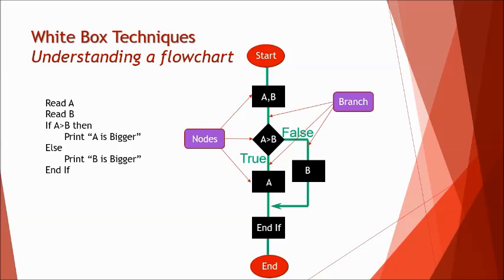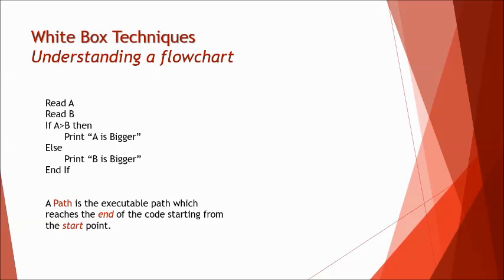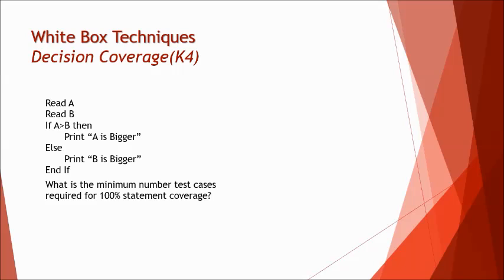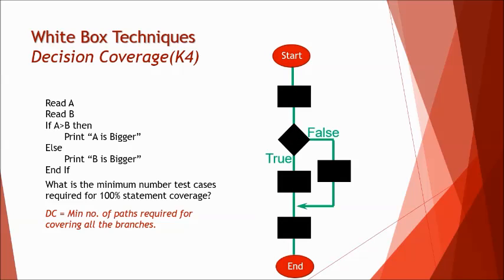A path in a flowchart basically starts from the start point and reaches the end point by following the directions or arrows, or the decisions made during the program. The same thing can be applied to achieve maximum coverage using the minimum number of test cases. Decision coverage measures the minimum number of test cases required to achieve 100% decision coverage, meaning all decisions and all branches are tested.